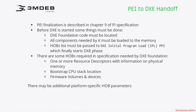The PEI to DXE transition is described in Chapter 9 of the Platform Initialization Specification. Before DXE starts, several crucial things must happen. First, the DXE Foundation code must be found and all components needed by DXE Foundation must be loaded into memory. Then the HOB list, containing crucial information required by the DXE phase, must be passed to the DXE Initial Program Loader (IPL) PPI — which is a PEIM-to-PEIM interface. This component finally starts the DXE phase, and in theory control should never return.